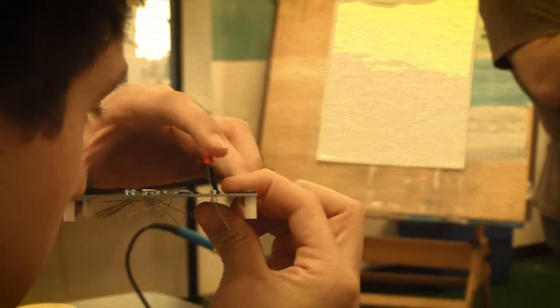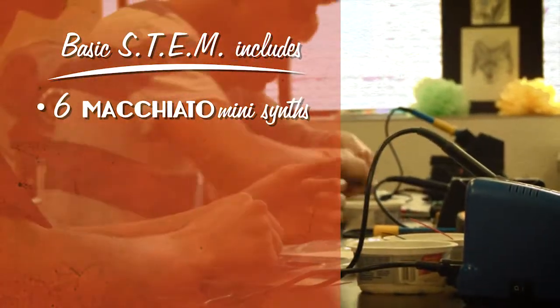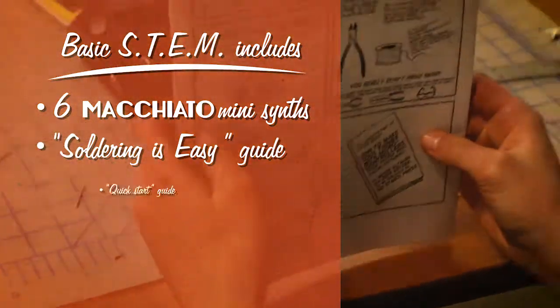Each phase takes from one and a half to two hours to complete. The basic STEM pack contains six Macchiato Mini Synth Kits, a Soldering is Easy Guide, and a Quick Start Guide.